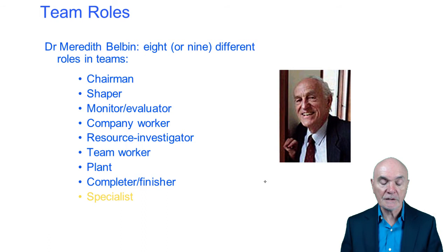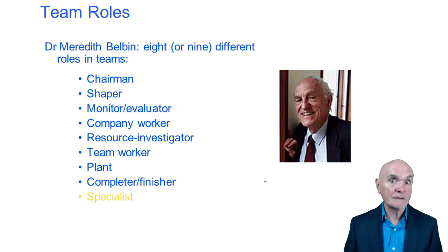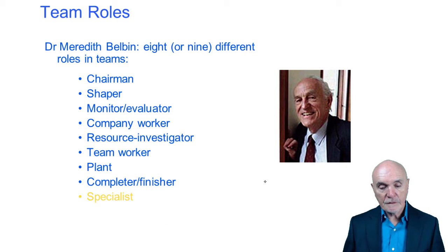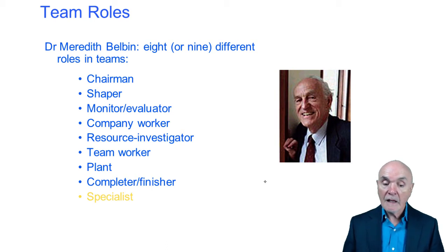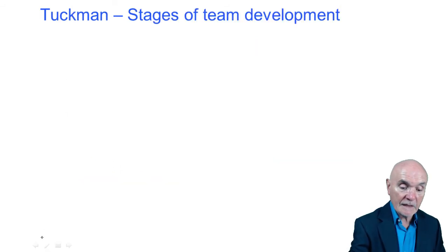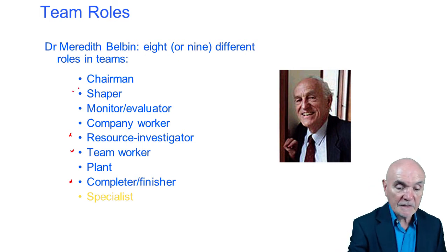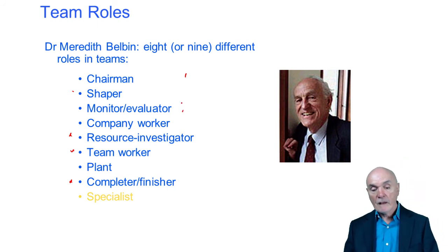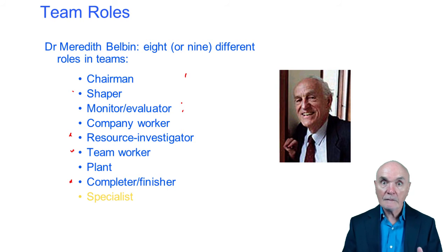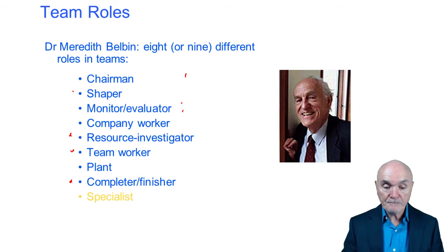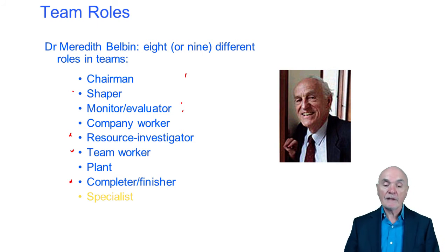So you might want to bring into your IT implementation group a specialist on IT security, for at least some of the meetings, who can give advice. Belbin would say that a well-constituted group or team will have elements of all of these psychological skills. It doesn't mean you have to have eight or nine people, because someone might be quite good at a number of these simultaneously. So somebody might be quite good at being a completer finisher, resource investigator, and a team worker. You need these elements of psychological expertise, as well as the specific skills they are bringing to the team.